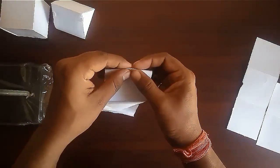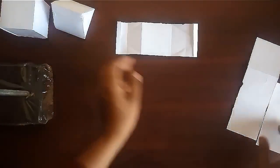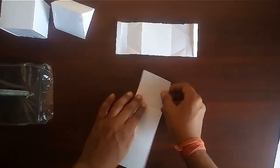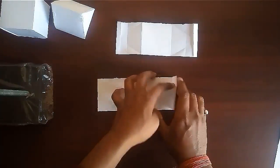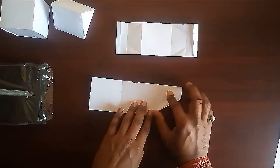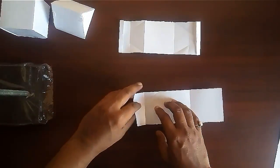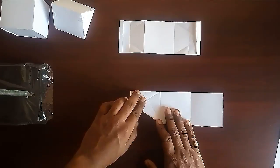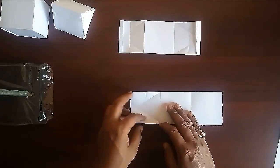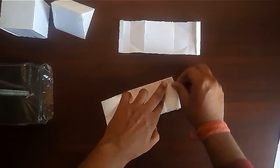In this way we will get an equilateral triangle. Fold it from the top of the vertex of the triangle. And we will get an equilateral triangle with 2 flaps. Do the same for the other sheet also.